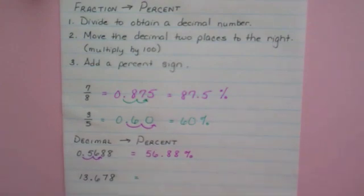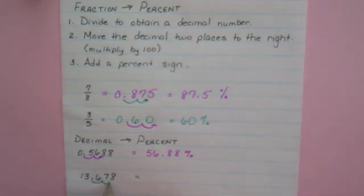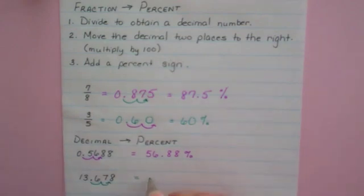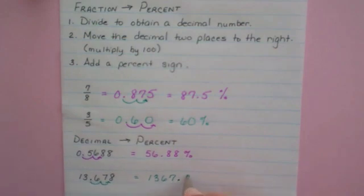And with this number here, that 13 might throw you off, but nothing changes. The rules are the rules. Take your decimal point, move it two places to the right. So now we have 1367.8%. So the rules are the rules no matter what your number looks like. So even though this was a number greater than 1, you still move your decimal place 2 to the right, you get a bigger number. Again, don't forget your percent signs on these.